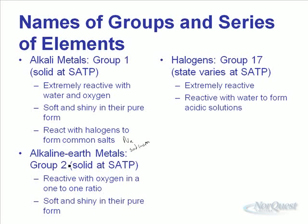Halogens, on the other side of the periodic table — group 17 — have variable states at SATP: some are solid, liquid, or gas. They are extremely reactive and even react with water to form acid solutions, so we don't see many of them in nature as pure substances.